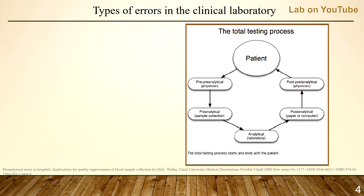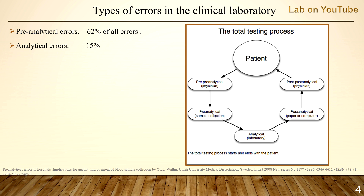Types of error in a clinical laboratory can be classified into three categories. Pre-analytical errors account for about 62% of all errors — some literature goes up to 68% — and this includes physicians and sample collections. Analytical errors are mainly related to the analysis process itself and account for about 15%. Finally, post-analytical errors account for about 23% and are related to physician, paper, and computer.